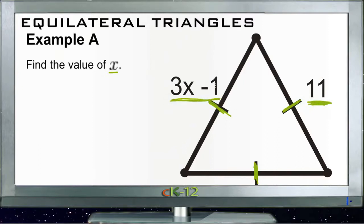So what we need to do is write that down. We have 3x minus 1 has to be the same thing as 11. So now we can just solve for x. We just add 1 to both sides.